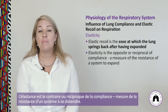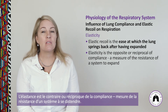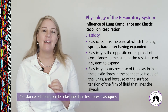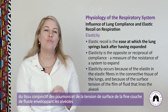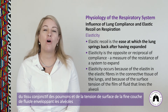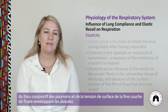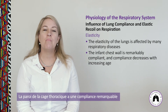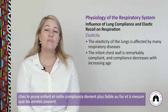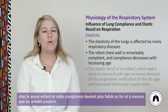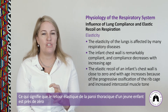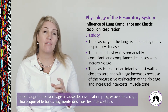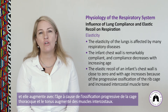Elasticity is the opposite or reciprocal of compliance — a measure of the resistance of the system to expand. It occurs because of elastin in the elastic fibers of the lung's connective tissue and the surface tension of the fluid lining the alveoli. The elasticity of the lungs is affected by many respiratory diseases. The infant chest wall is remarkably compliant, with compliance decreasing with increasing age. The elastic recoil of an infant's chest wall is close to zero, increasing with age due to progressive ossification of the ribcage and increased intercostal muscle tone.